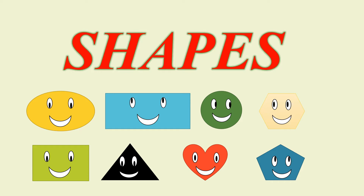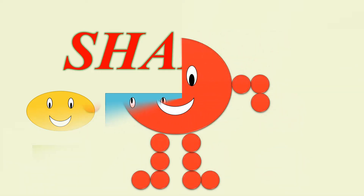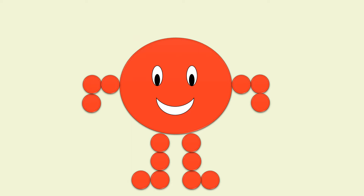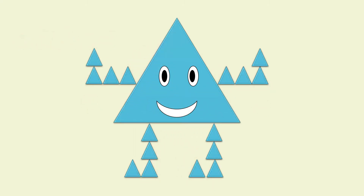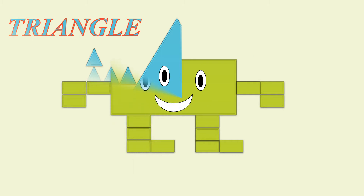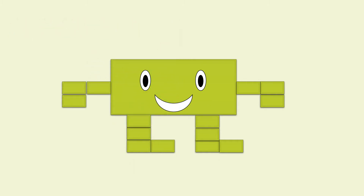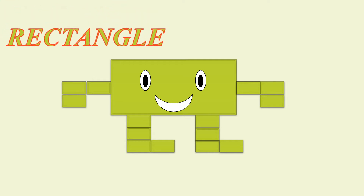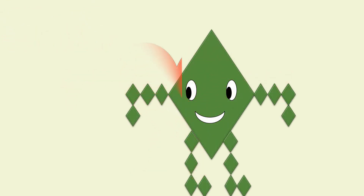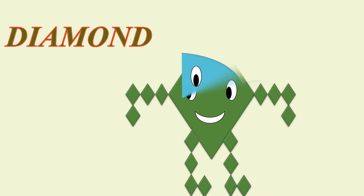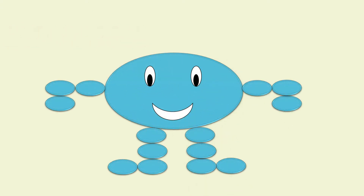Shapes! We are shapes. What shape is this? It's a circle. What shape is this? It's a triangle. What shape is this? It's a rectangle. What shape is this? It's a heart. What shape is this? It's a diamond. What shape is this? It's an oval.